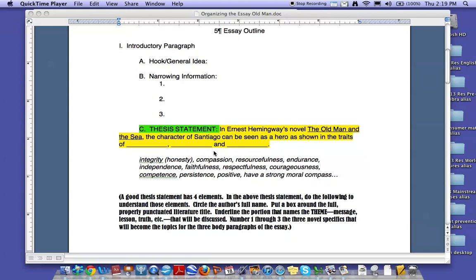And then, one, two, and three would be the specific traits that you would choose from this list, or different ones if you have different ones that you would prefer to use, that would be the traits you would use to show how Santiago is a hero. You would argue that in your paper.